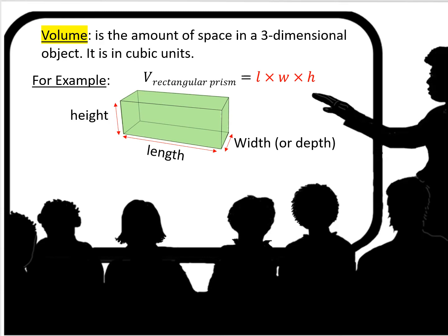Cubic units means that if the length, width, and height were all in centimeters, then your volume would be in centimeters cubed. If each dimension were in inches, it would be in inches cubed. If it was in meters, it would be in meters cubed.